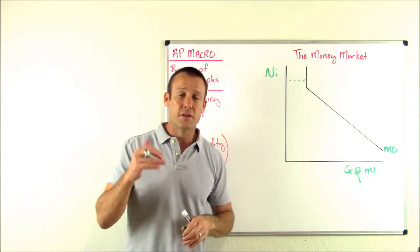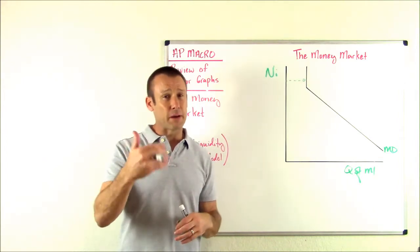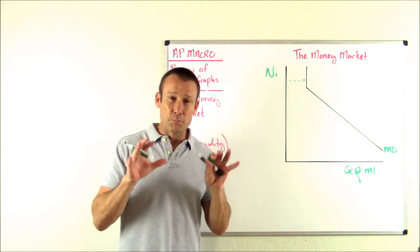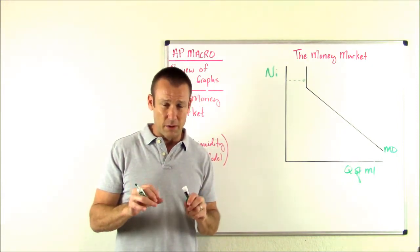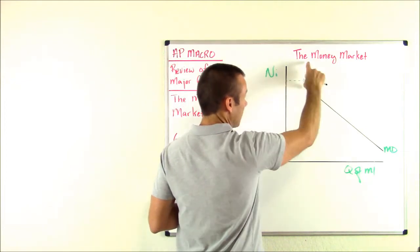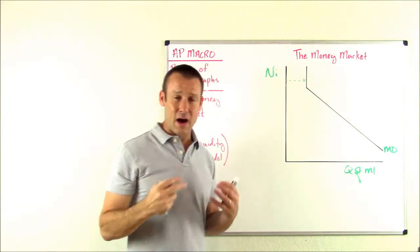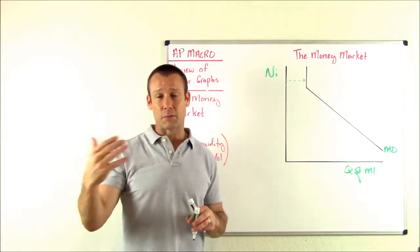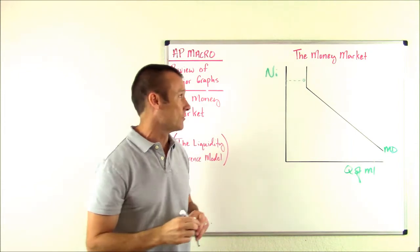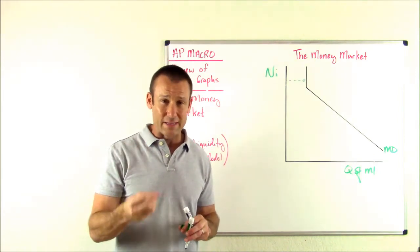Transaction demand for money is our demand for holding our wealth in liquid form to do basic transactions — pay our rent, pay our utility bill, pay our insurance, buy groceries. That's our transaction demand for money, our demand for money to do basic transactions. This component of money demand is vertical, meaning it is not dependent on the nominal interest rate. I don't look at the nominal interest rate to decide whether to pay my rent — I just pay my rent.